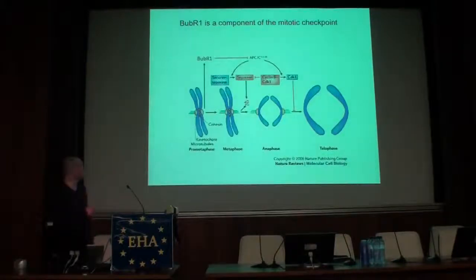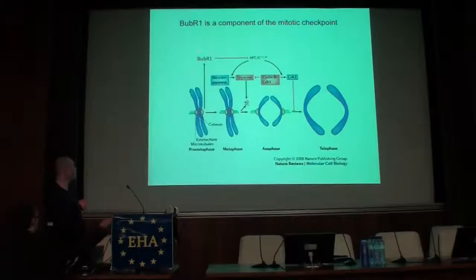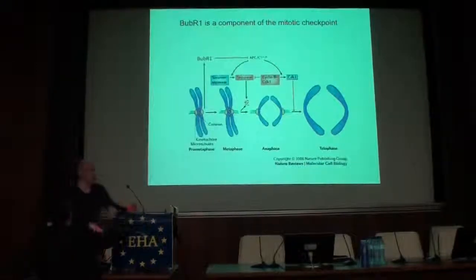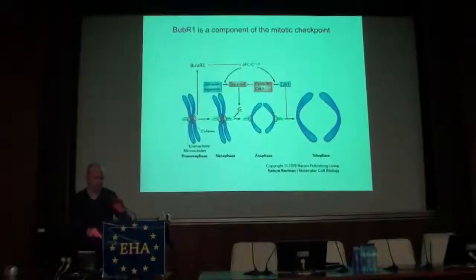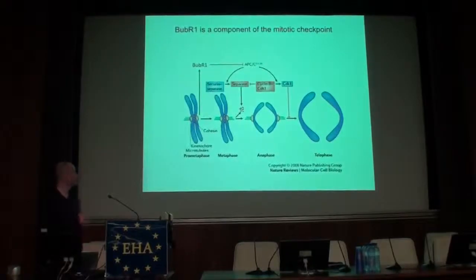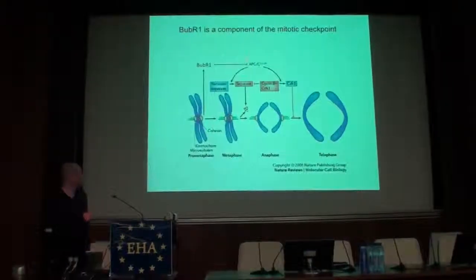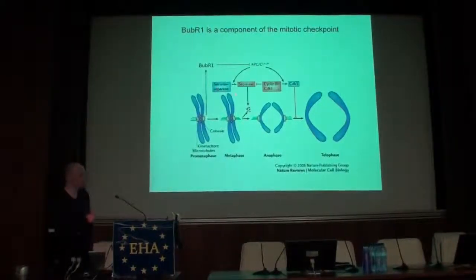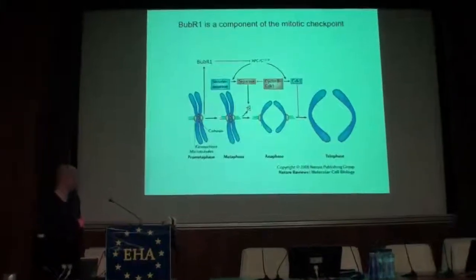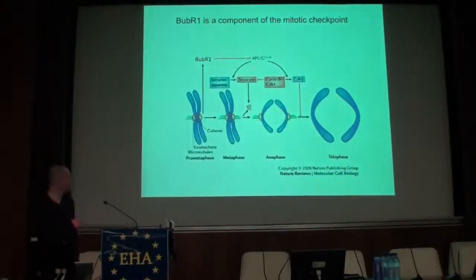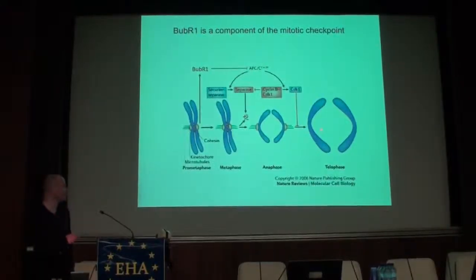BubR1 is an element of the spindle assembly checkpoint. It inhibits progression through mitosis until all chromosomes are properly attached. After that, it dissociates from the APC, and then normal progression of mitosis can occur.